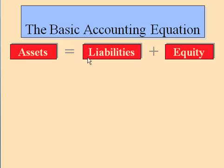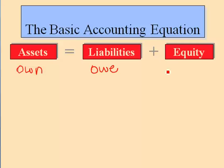The equation is: assets equal liabilities plus equity. Assets are things that you own, liabilities are things that you owe, and equity is the difference between what you own and what you owe.